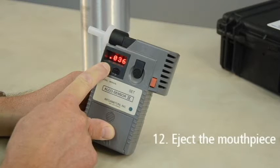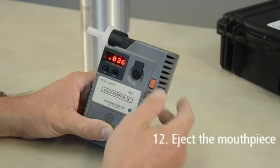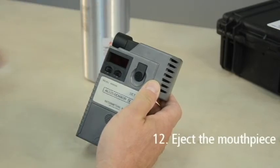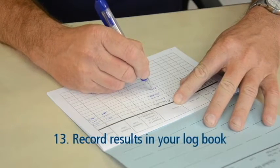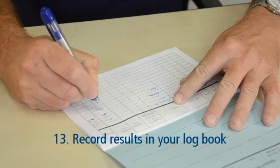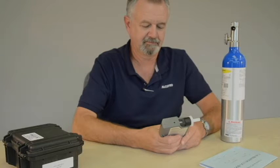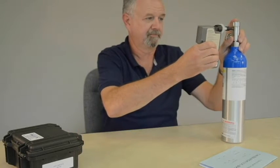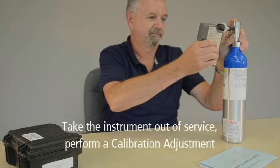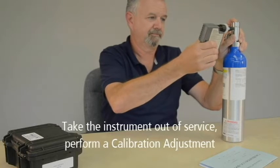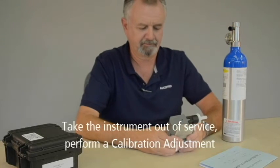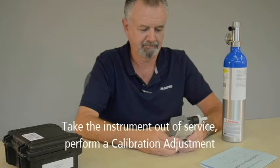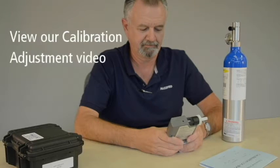When you hear the beep, press the red button and eject the mouthpiece. Record the accuracy check result in your logbook. If the result of your accuracy check falls outside of the acceptable tolerance range, you must take the instrument out of service and perform a calibration adjustment to bring the instrument back into an acceptable tolerance range. You can view the Alkosensor 4 calibration adjustment video for step-by-step instructions.